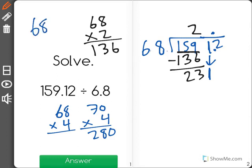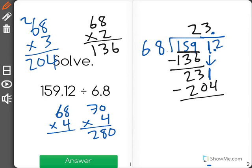So I'm going to try 68 times 3. And when I solve that, you'll see that I get a total of 204, which is below 231.